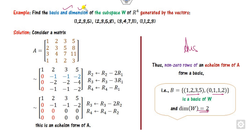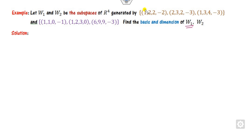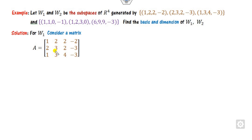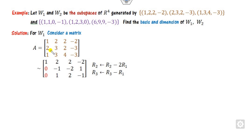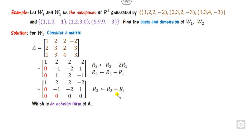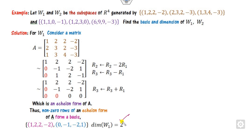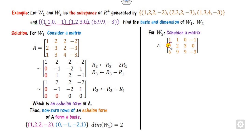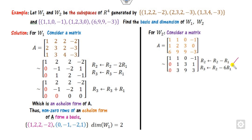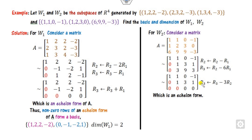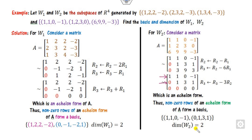For W1: write the matrix, make elements 0 using row operations, take R3 plus R2. In the row echelon form, there are 2 non-zero rows. So the dimension of W1 is 2 and the basis vectors are the corresponding rows. For W2: write the matrix, apply operations to make elements 0, use shortcut tricks to simplify. Again, 2 non-zero rows — so dimension of W2 is 2.